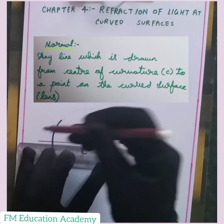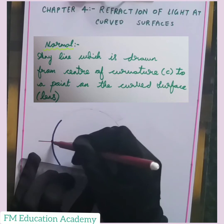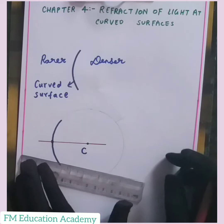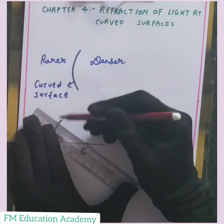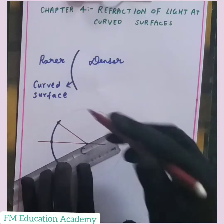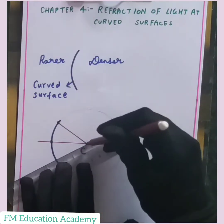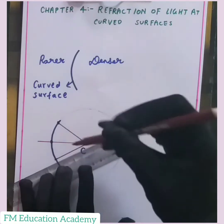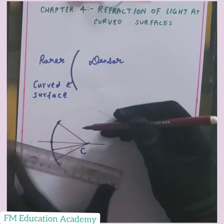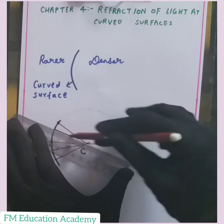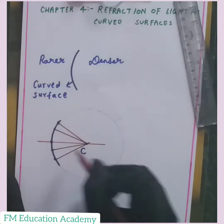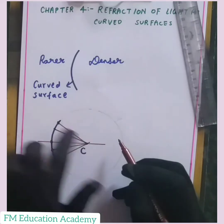Any line drawn from the center of curvature to a point on the curved surface becomes the normal. So here this is my normal, and similarly from center of curvature I can draw more normals. Any line from the center of curvature to a point on the lens is also a normal. We can draw many normals from the center of curvature to the lens.